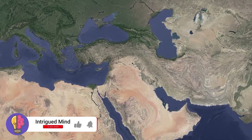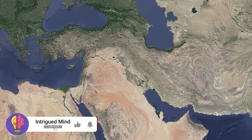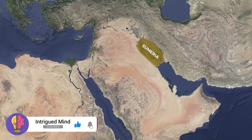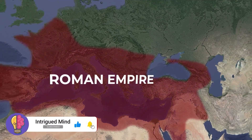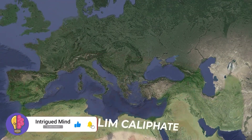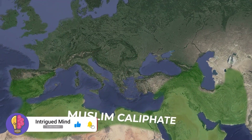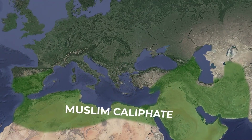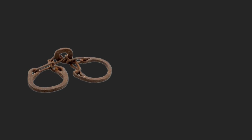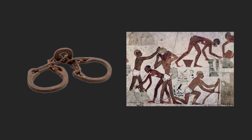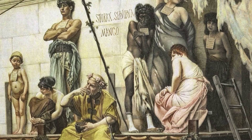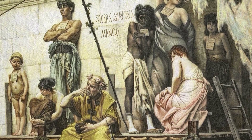Slavery has existed throughout human history. From ancient Sumeria, to Egypt, to the Roman Empire and the Muslim Caliphate, slavery was an integral part of society. This more ancient form of slavery was generally not based on race, but was rather a pure power dynamic.